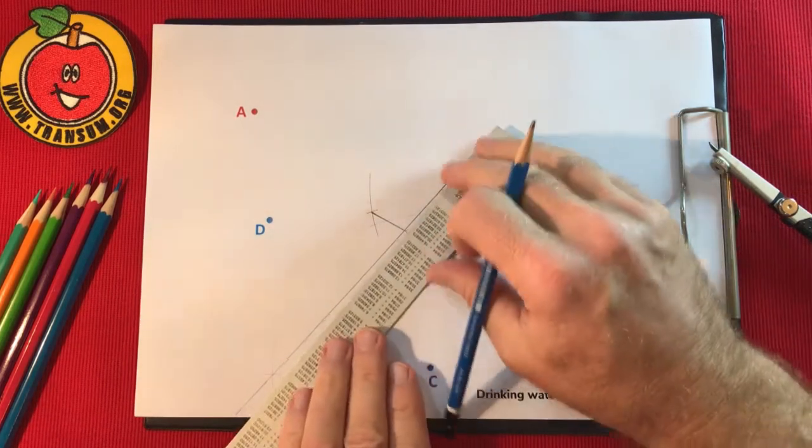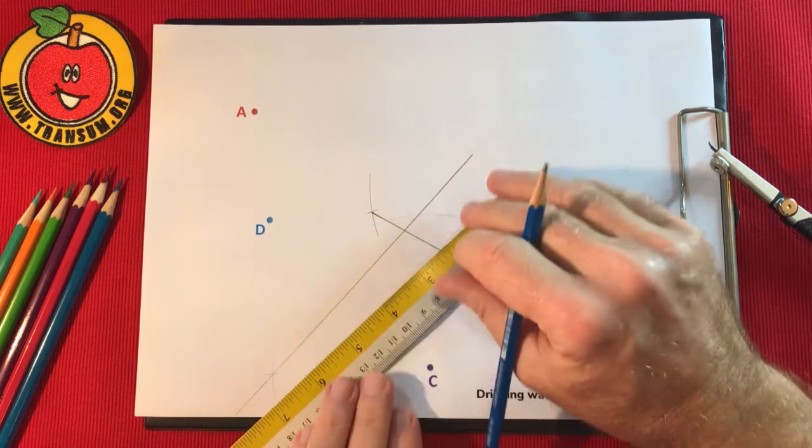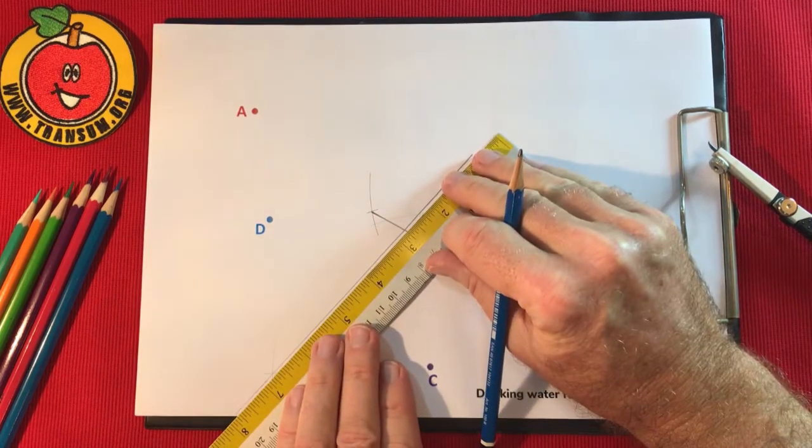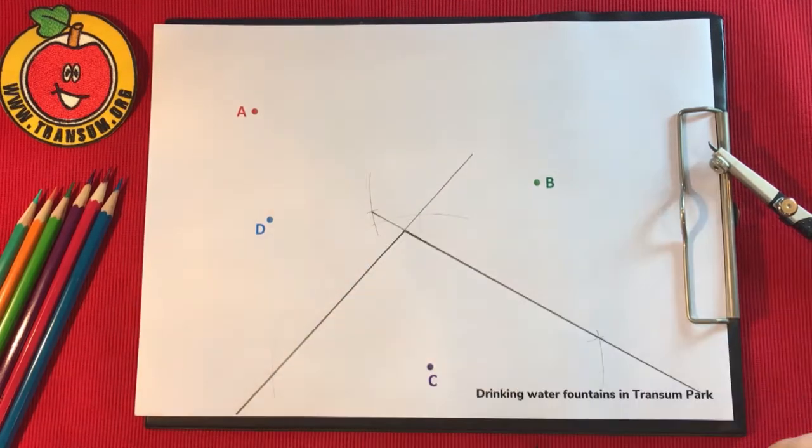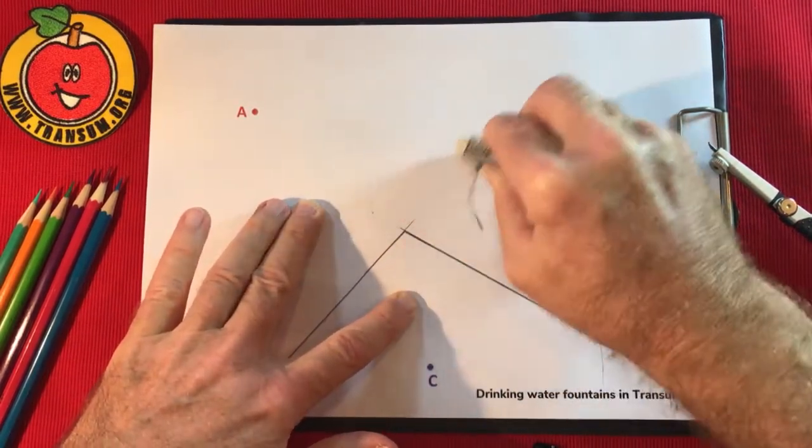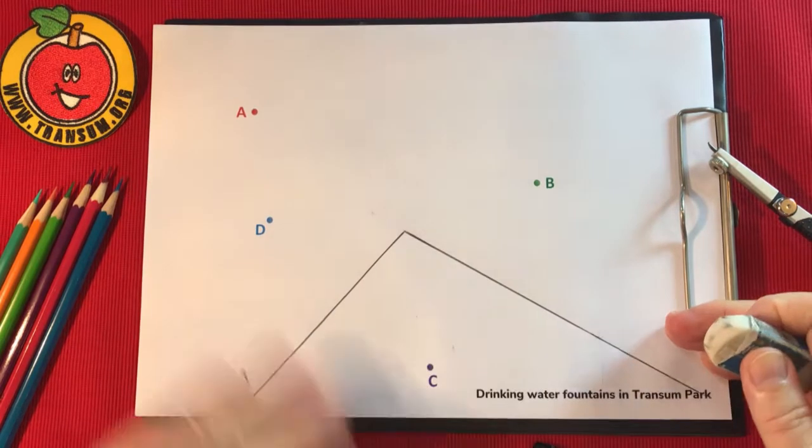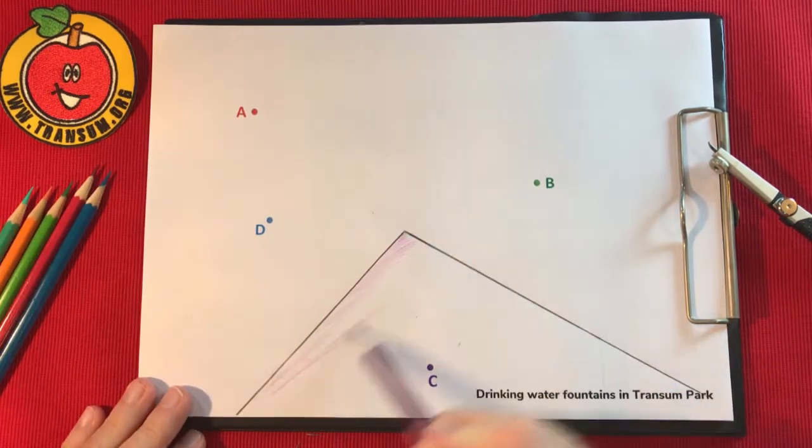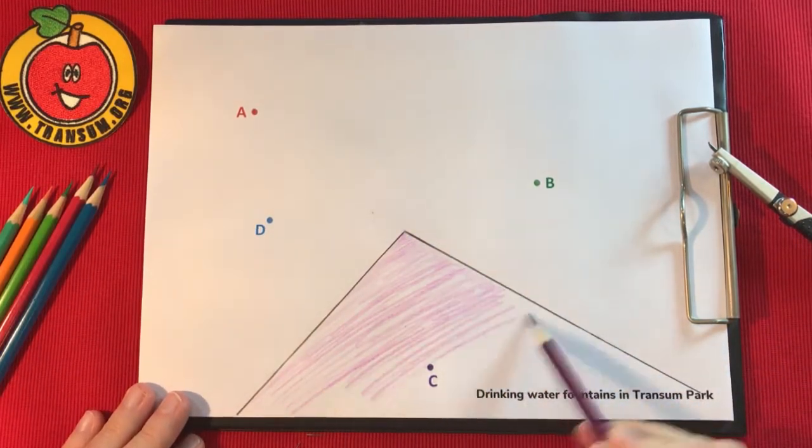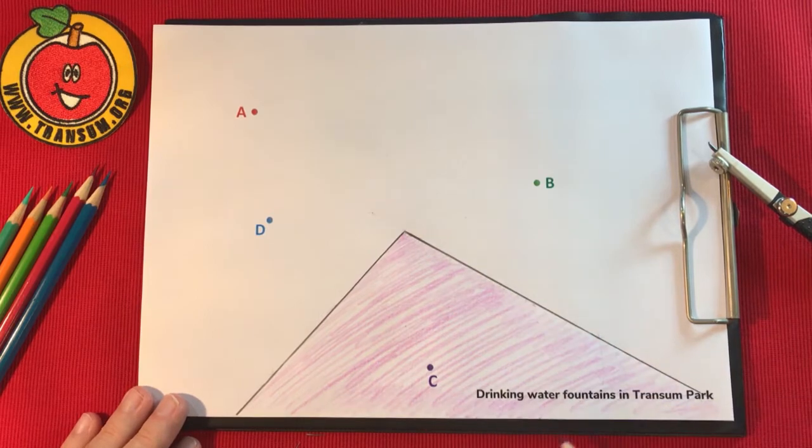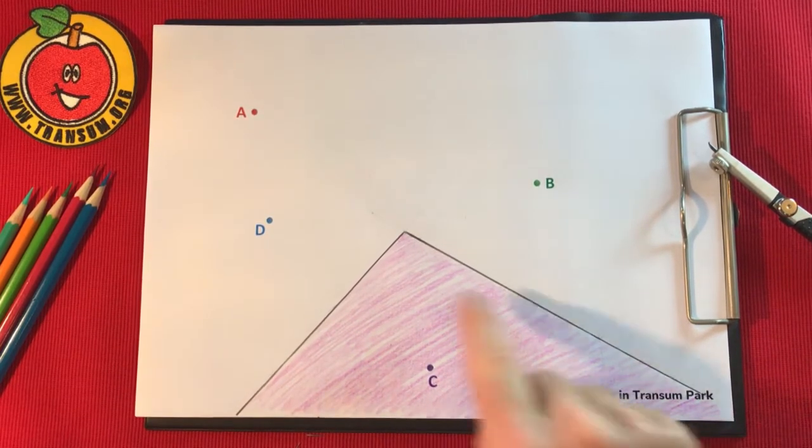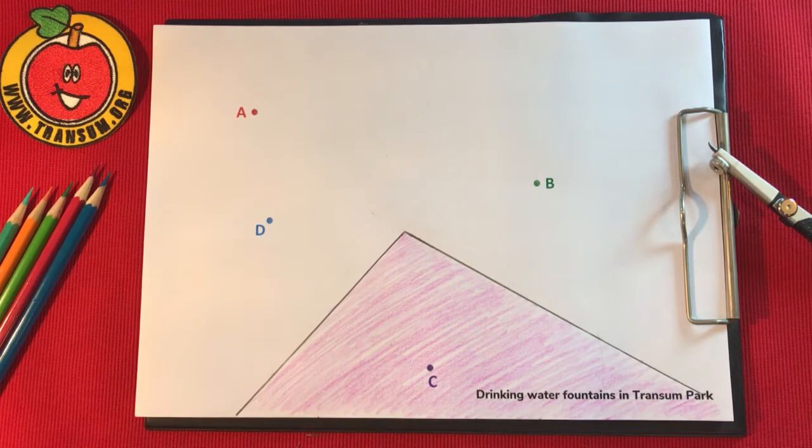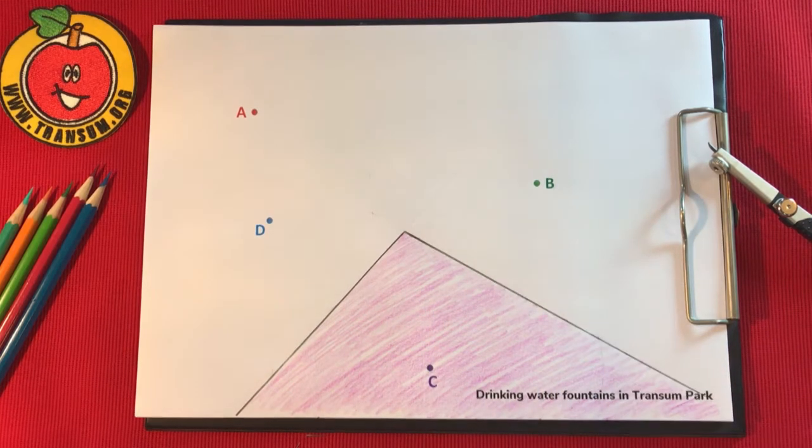Now I'm going to confirm that. I think I'll go over these lines a little more decisively. So anywhere in this purple region here is closer to C than any other fountain.